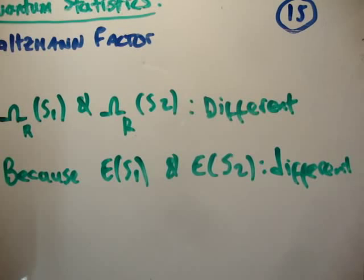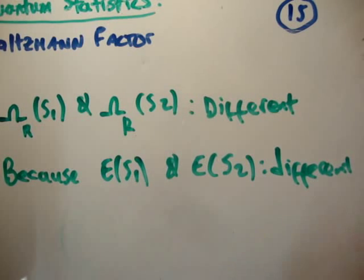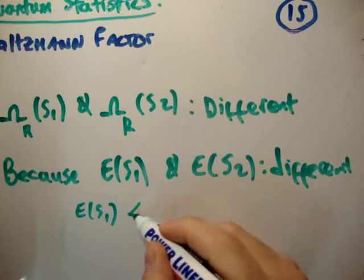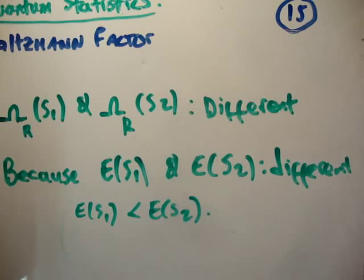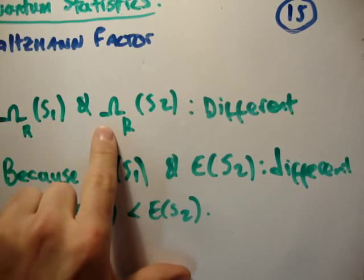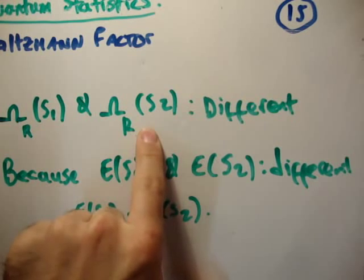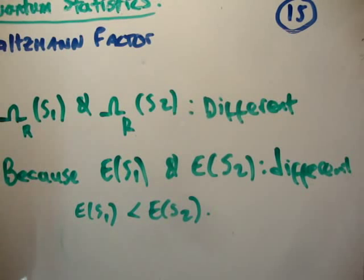Let's say the energy of state S1 is less than the energy of state S2. If the atom is taking less energy out of the reservoir, there's more energy left in the reservoir, which increases its multiplicity. Conversely, if the energy level when the atom is in state S2 is higher, it will take more energy from the reservoir, leaving less in the reservoir, reducing the multiplicity of the reservoir. So in general, higher energy states for the atom reduce the multiplicity of the reservoir.